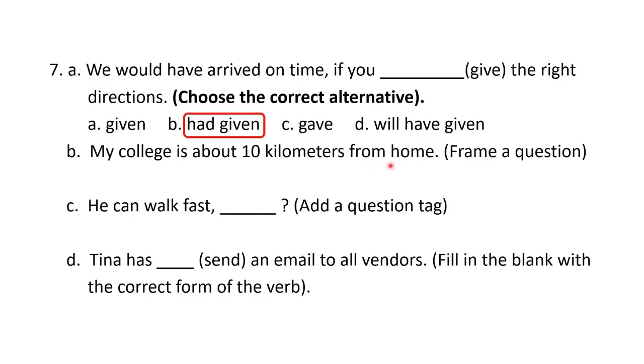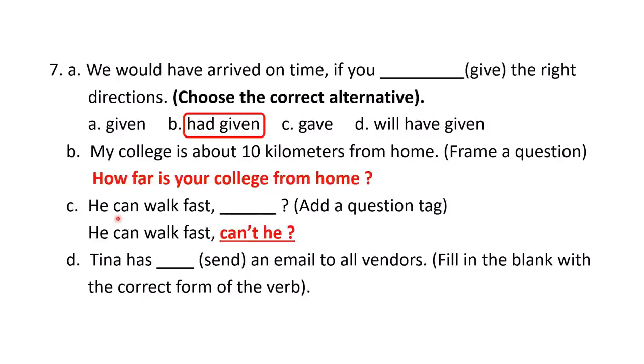B: 'My college is about 10 kilometers from home.' Frame a question — 'How far is your college from home?' C: 'He can walk fast.' Add a question tag. The answer is 'He can walk fast, can't he?' If the main clause is positive, the question tag is negative — 'can' becomes 'can't' in the question tag.